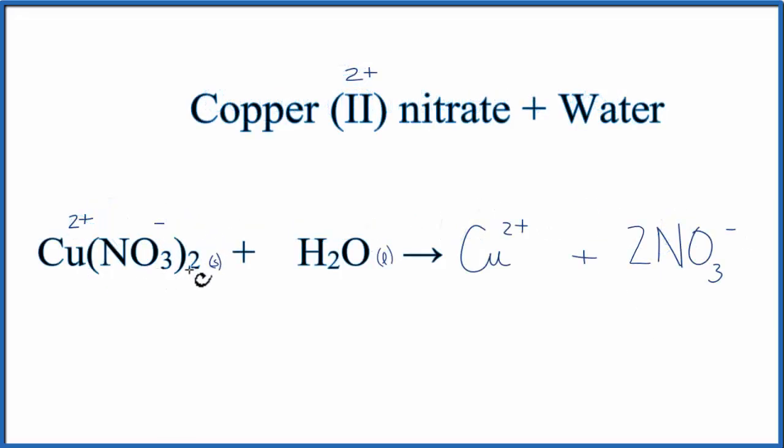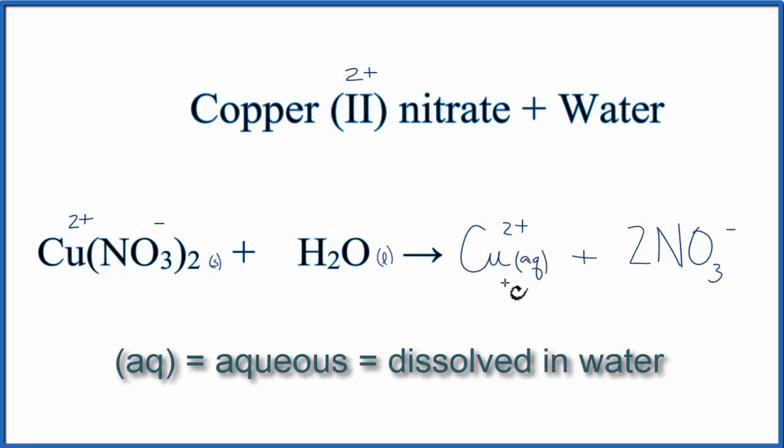Because this Cu(NO3)2 is dissolved in water, we're going to write AQ after each of the ions. That means these ions are aqueous, they are dissolved in water. Because of that, we don't need to write H2O over on this side of the equation. These ions are both dissolved in water, they are aqueous.